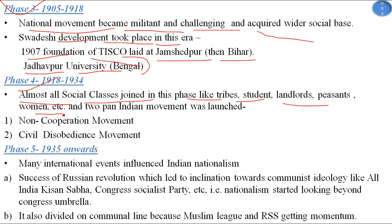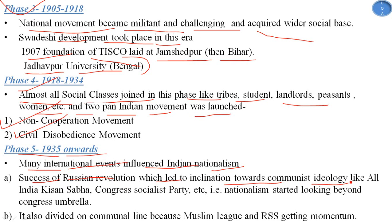In phase four, from 1918 to 1934, almost all social classes joined — tribes, students, landlords, peasants, women, etc. Two pan-Indian movements were launched: the Non-Cooperation Movement and the Civil Disobedience Movement. In phase five, from 1935 onwards, many international events influenced Indian nationalism, including the success of the Russian Revolution, which led to inclination towards communist ideology, giving rise to organizations like the All India Kisan Sabha and the Congress Socialist Party. Nationalism also became divided on communal lines as the Muslim League and RSS gained momentum.